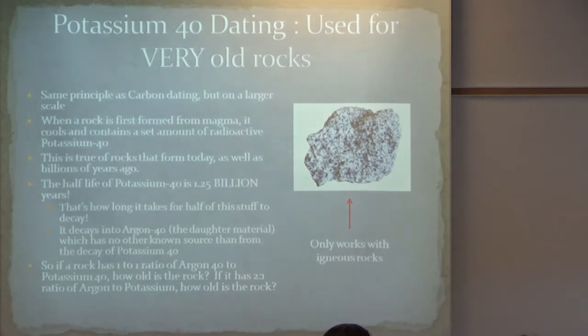It's the only way we can get argon-40 is from the decay of potassium-40. So if a rock has a one-to-one ratio of argon-40 to potassium-40, meaning there's an equal amount of potassium-40 and argon-40 in the rock, how many half-lives has the rock gone through? One. That means the rock solidified from a molten state 1.25 billion years ago because it's gone through one half-life. If it has a ratio of two to one, it means it's got twice the amount of argon as potassium. How many half-lives has it gone through? Two. 2.50 billion years old. Those are easy examples. Math's a little bit more complicated than that when you're actually measuring it because, you know, nature generally isn't that clean for us.